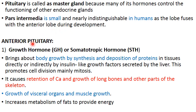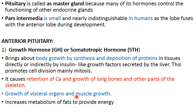The first anterior pituitary hormone is growth hormone (GH), also called somatotropic hormone (STH). It is involved in the overall growth of a person, bringing about bodily growth by promoting synthesis and deposition of proteins in tissues — either directly or indirectly through insulin-like growth factors secreted by the liver. It promotes cell division, mainly mitosis, and causes retention of calcium, growth of long bones, skeletal parts, visceral organs, and muscles. It also increases metabolism of fats to provide energy.